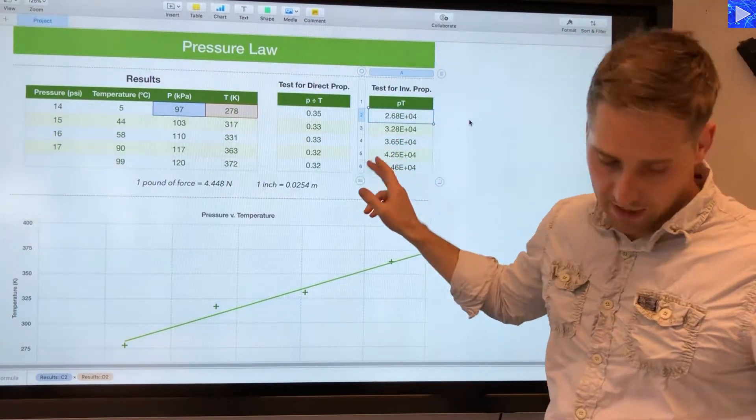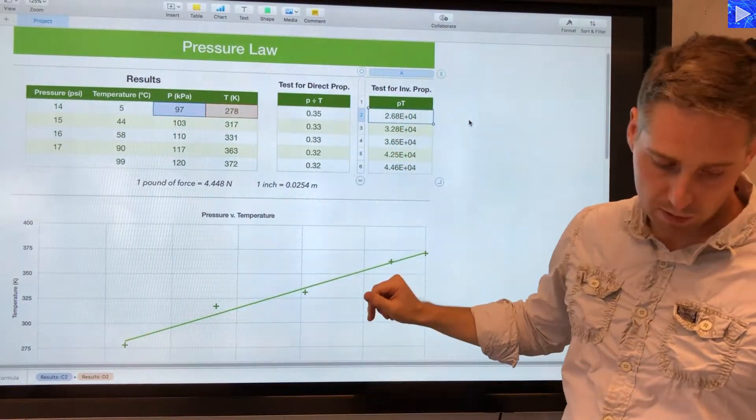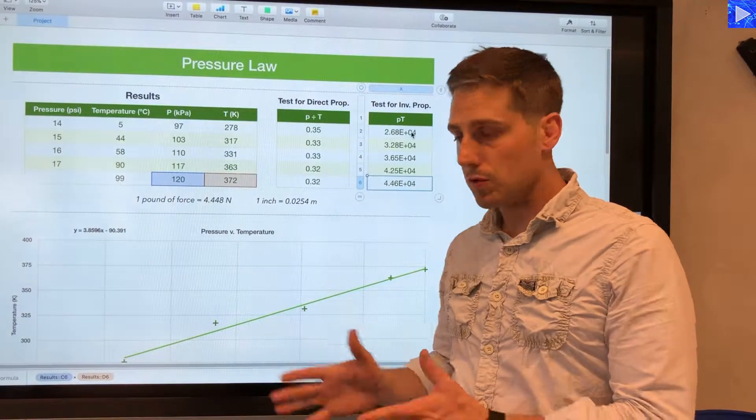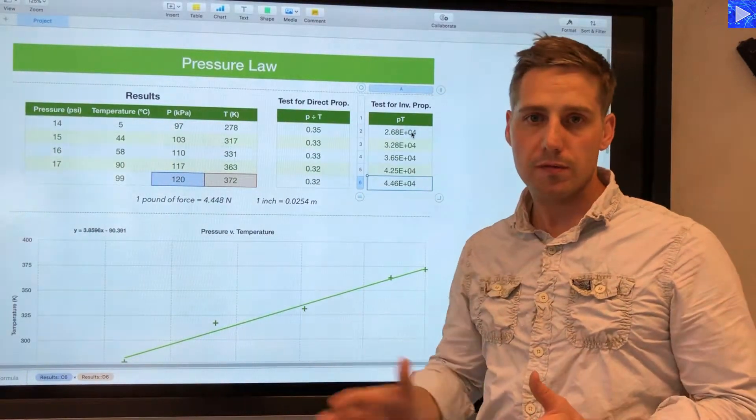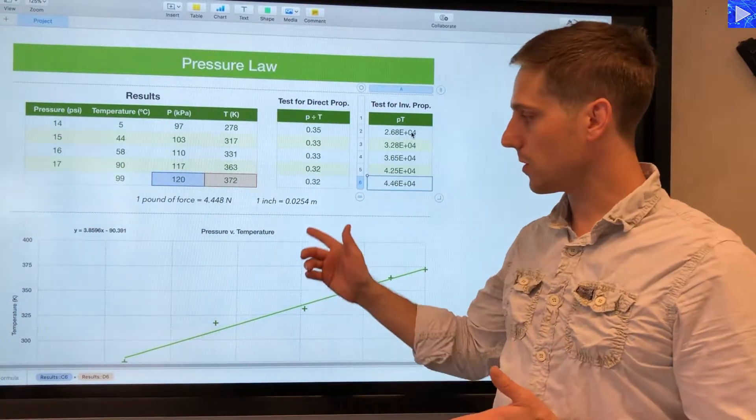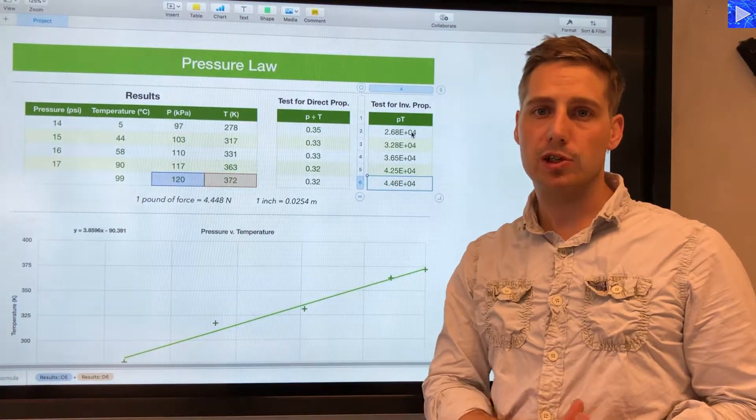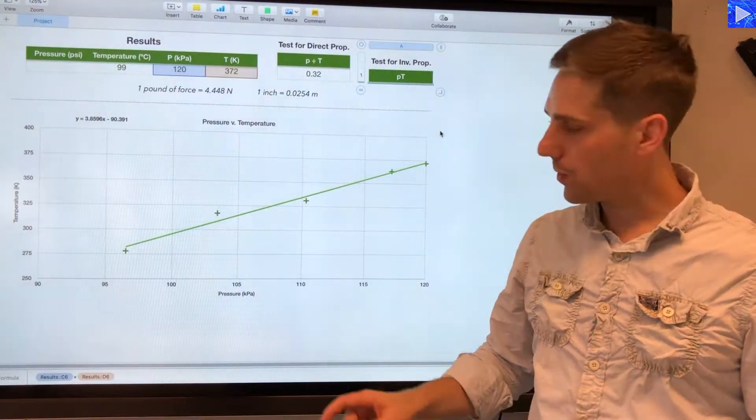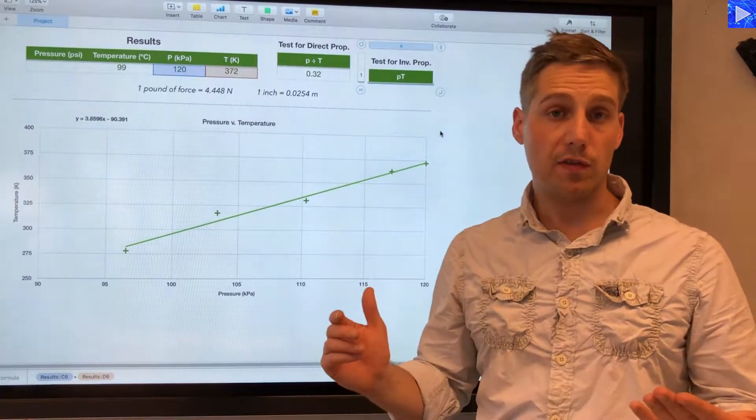So yeah, you can see that that multiplication is repeated down here. So the other thing that we'd want to look at is a graph. We could look at two graphs: we could look at pressure versus temperature and pressure versus one over the temperature, the reciprocal. And we'd be looking to see which one gave us a straight line through the origin.